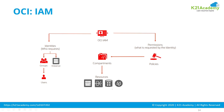Similarly, all databases go into a DBA compartment and you give database administrators manage access on that DBA compartment. This means users in the network group will not be able to delete or create databases, and members of the DBA group will not be able to create or manage network resources, though they will be able to use them. So users, groups, compartments, and policies make up your Identity and Access Management.